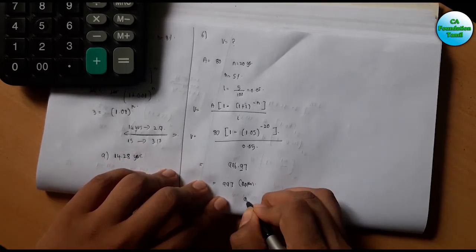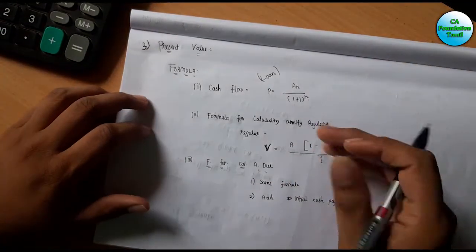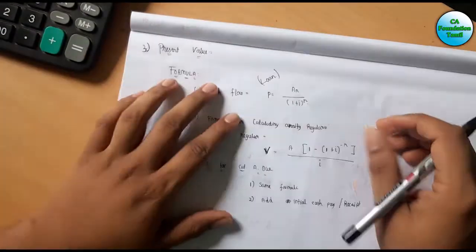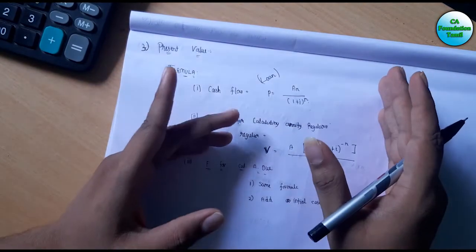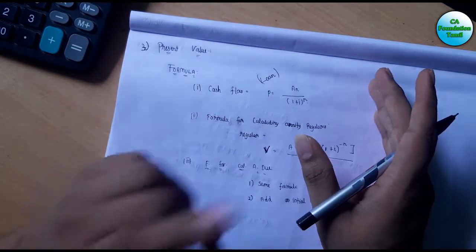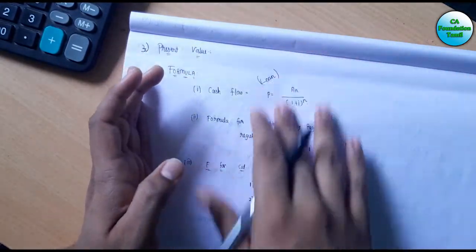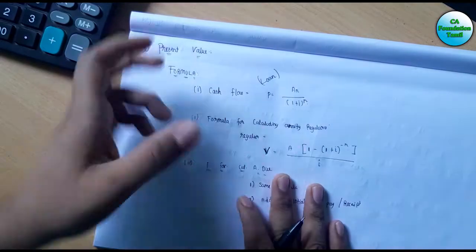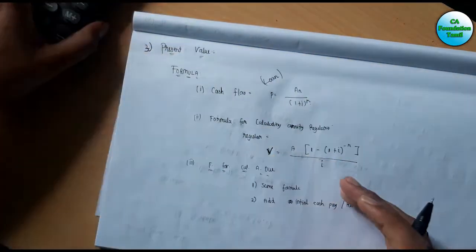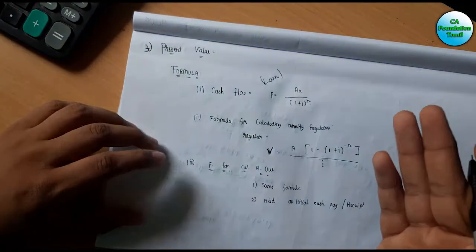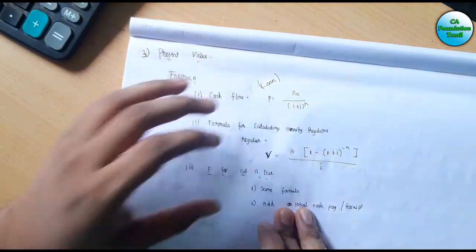Now checking Option A for this answer. We are going to review the concept formula for present value of an annuity, covering the future and present value concepts.